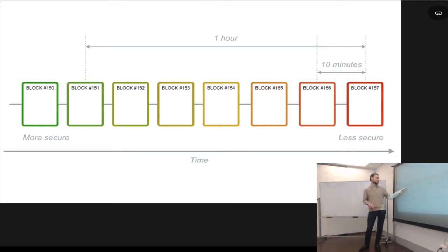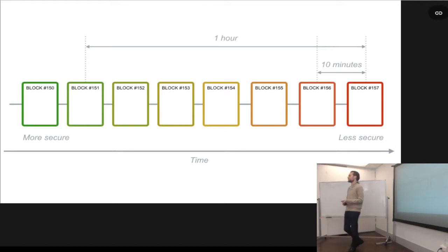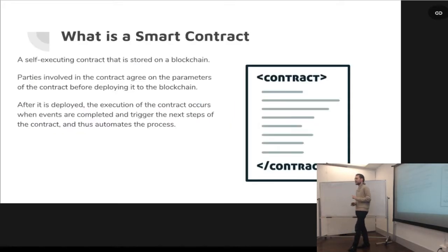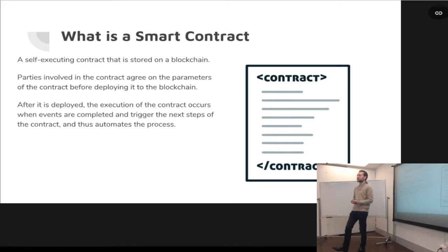With smart contracts, you can store them in a block, and same thing — if you wanted to alter or adjust your contract, it would be near impossible to do so. Of course, you can write in different negotiation points. So what is a smart contract? It's a self-executing contract that's stored on a blockchain. The parties involved agree to the parameters and then they deploy it to the blockchain.